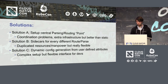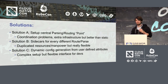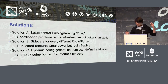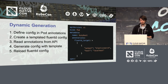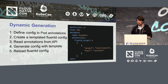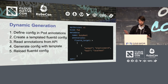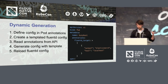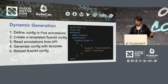The third solution, which I'm presenting today, is to let developers define their logging targets and parsing patterns in annotations, and then dynamically generate the Fluentd config from these annotations — so developers have huge flexibility. You first need to get the developers to define their logging attributes, like wherever they want to log — Elasticsearch or something else — and their parsing patterns inside the deployment or pod specification. Then you create a templated Fluentd config, read the annotations from the API, generate the full config with the template and the data, and then reload the Fluentd config.